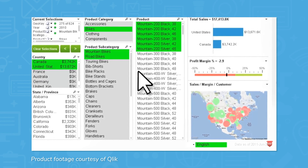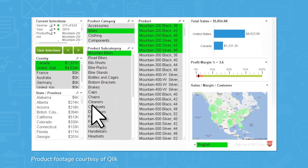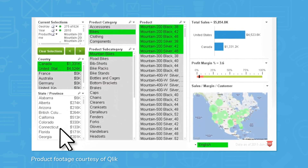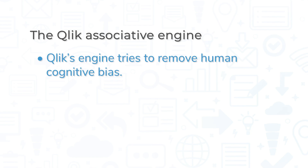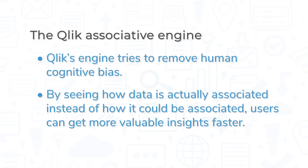Basically, Click's engine tries to take as much human cognitive bias out of the equation as possible. The idea is that by seeing how data is actually associated, as opposed to how someone might think it could be associated, users can get much more valuable insights from their data and arrive at conclusions faster.